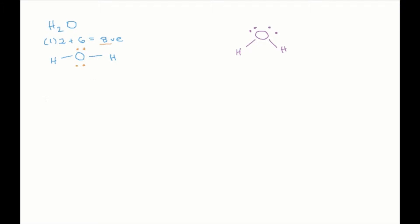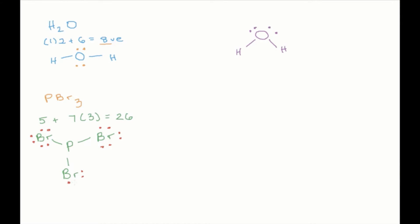Let's look at PBr₃. I've got to first count my total number of electrons. For phosphorus I have five valence electrons. For bromine I have seven, so it's going to be seven times three — a total of 26 valence electrons. I'm going to share electrons, so I have one, two, three bromines coming off of phosphorus. Remember, every atom except hydrogen and helium needs eight valence electrons. Right now each bromine only has two, so I'm going to add six to each bromine. Then phosphorus has two, four, six — so it needs two more.